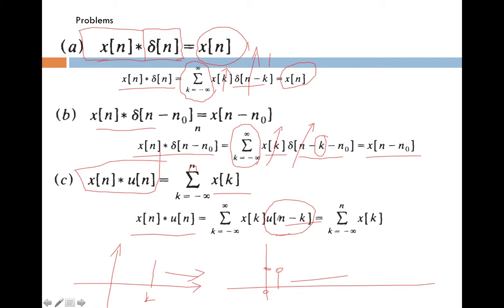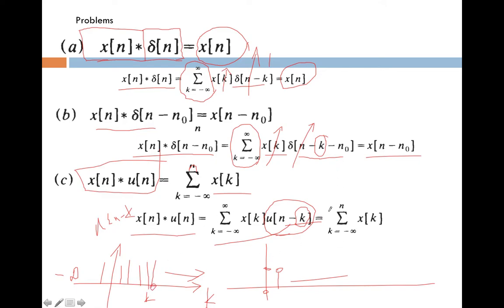The variable in the summation is k, and because of the minus k in u of n minus k, the step function in terms of k starts from minus infinity and goes up to n. So the summation range reduces to k from minus infinity to n, and the result is summation k from minus infinity to n of x of k. This is the result for x of n convolution u of n.